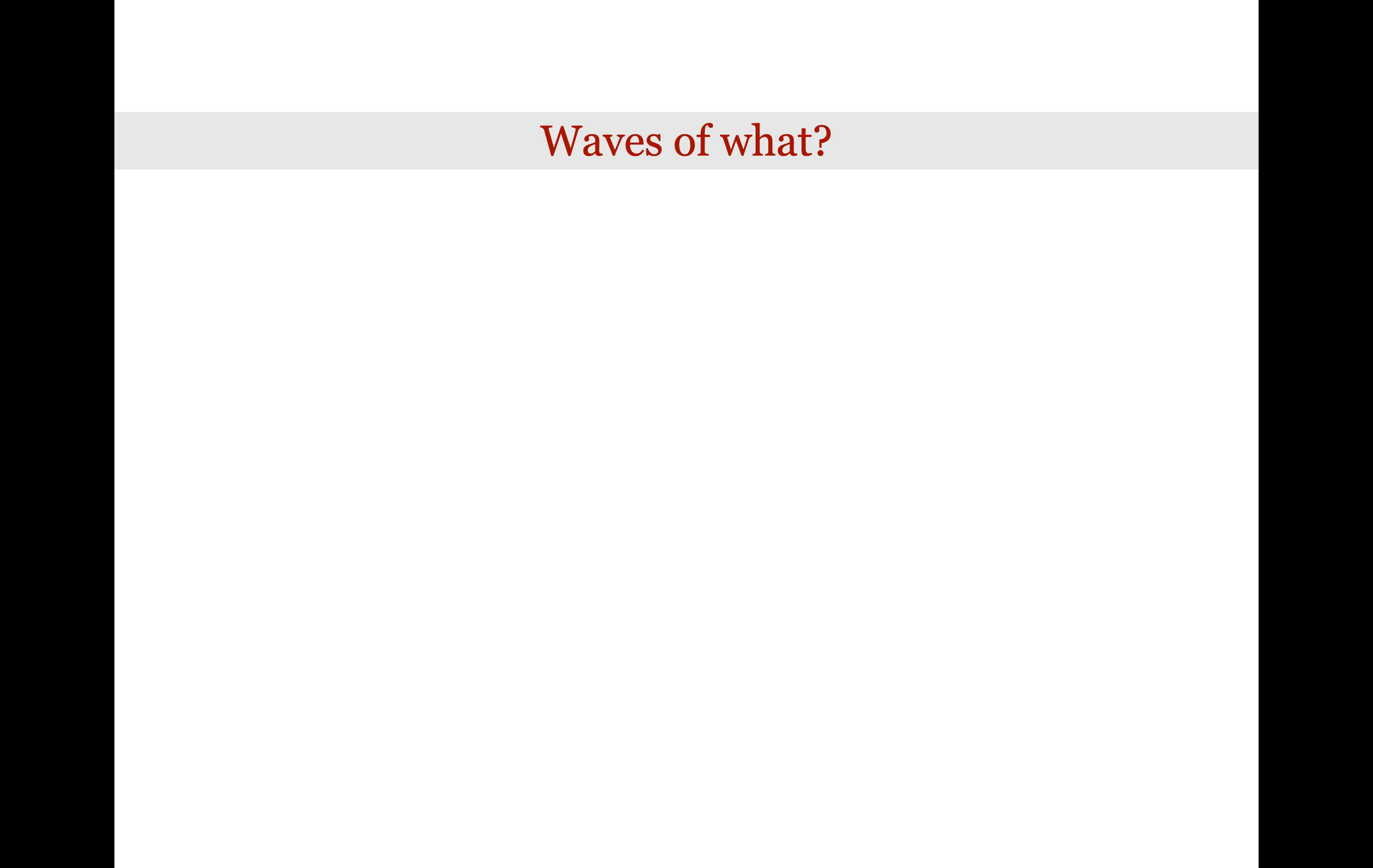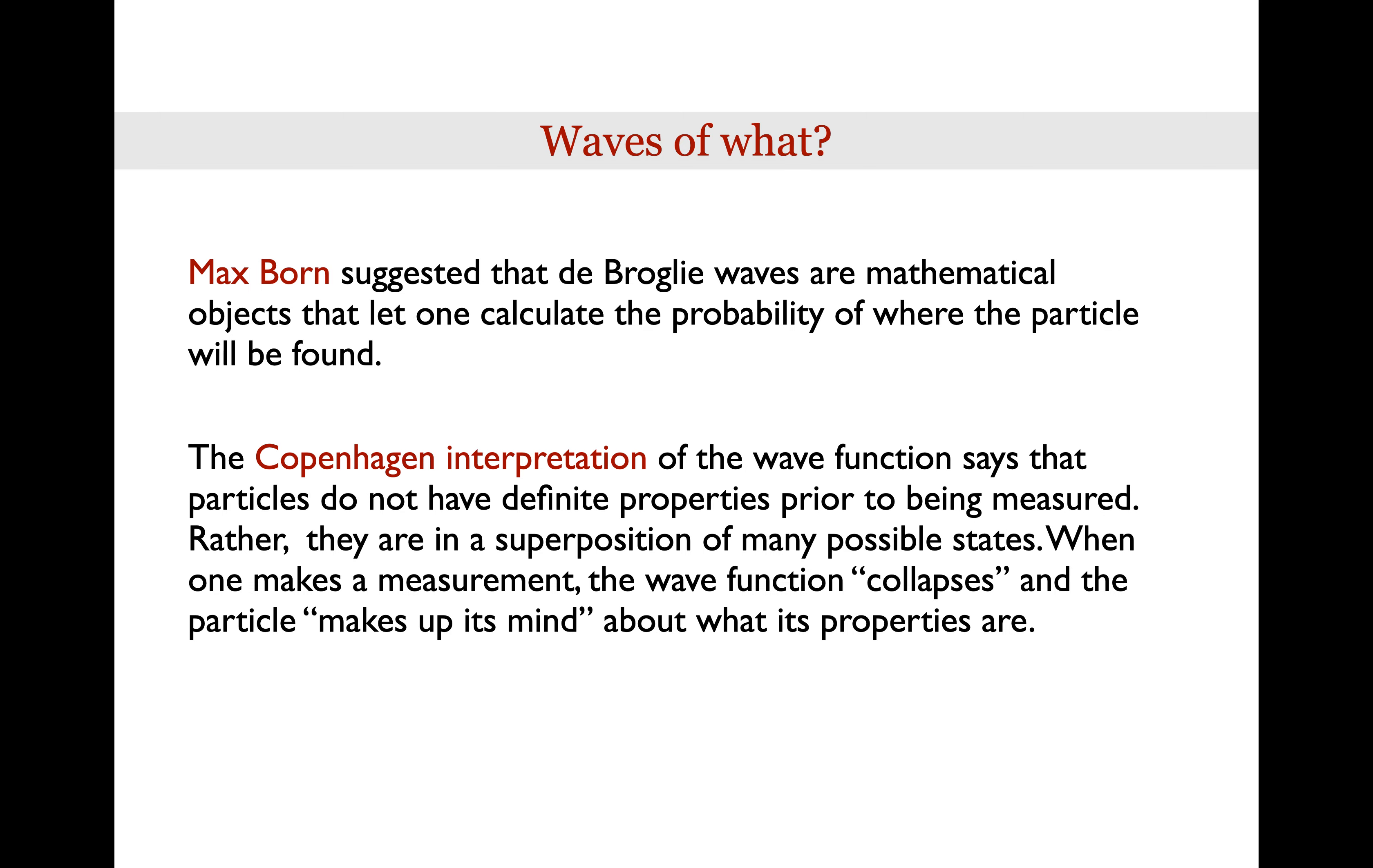So what are they waves of? Well, the physicist Max Born suggested that de Broglie waves are mathematical objects that let one calculate the probability of where the particle will be found. So in some sense, one could say they're waves of probability. The Copenhagen interpretation of the wave function says that particles do not have definite properties prior to being measured. Rather, they are in a superposition of many possible states. When one makes a measurement, the wave function collapses and the particle makes up its mind about what its properties are. We will discuss this in more detail later in the semester.